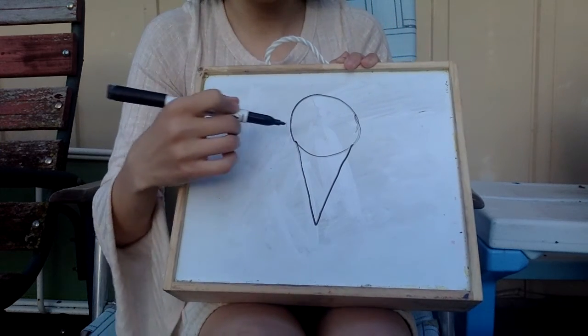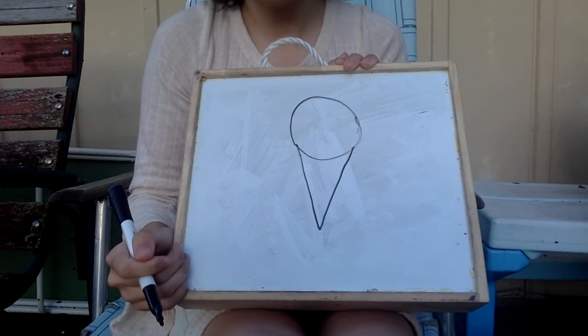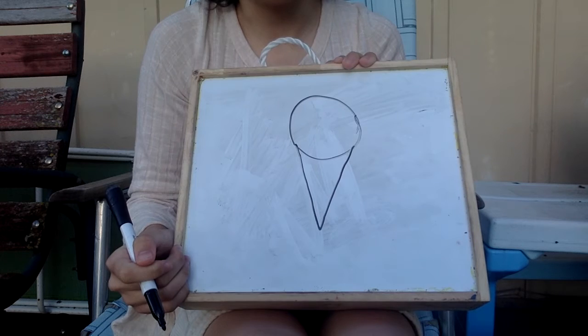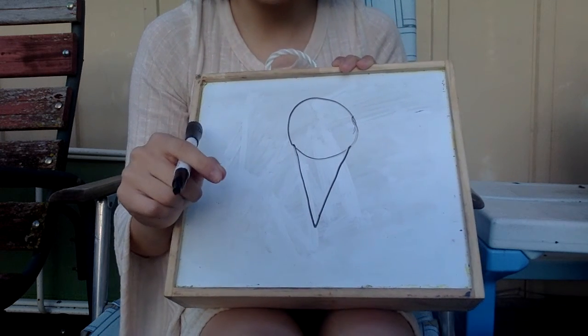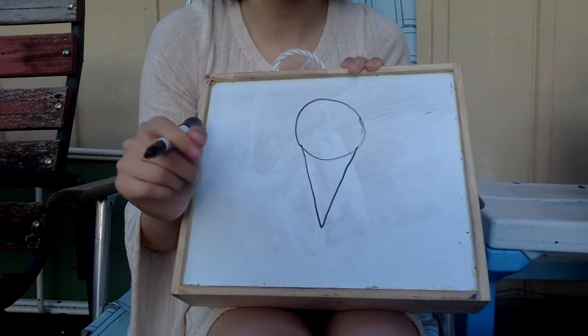So far we have a circle and a triangle. Those are not really 3D looking, are they? They're more like 2D. To make this 3D, we're going to have to add some shadows.